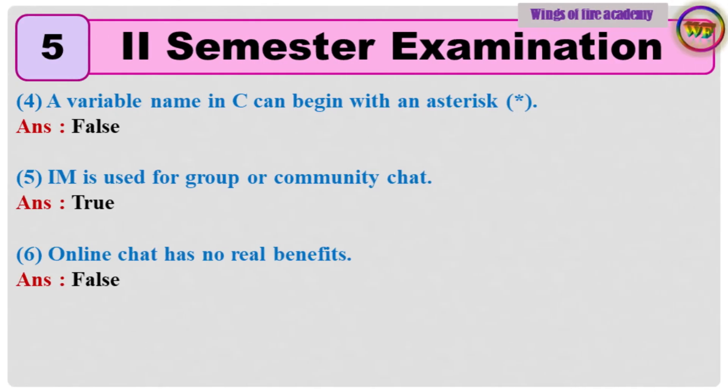4. A variable name in C can begin with an asterisk. Answer: False. 5. IIM is used for group or community chat. Answer: True. 6. Online chat has no real benefits. Answer: False.